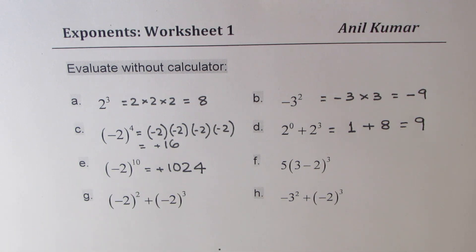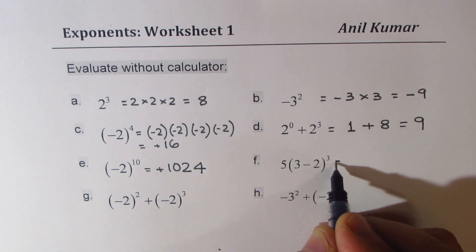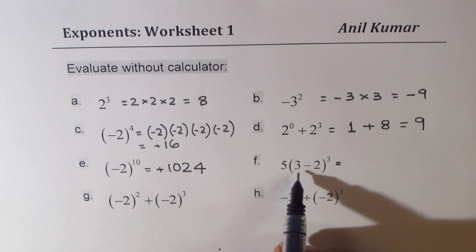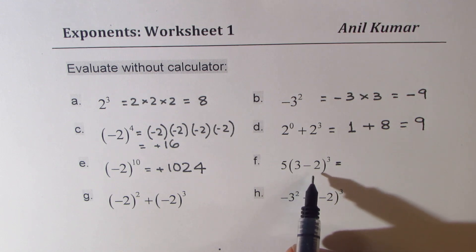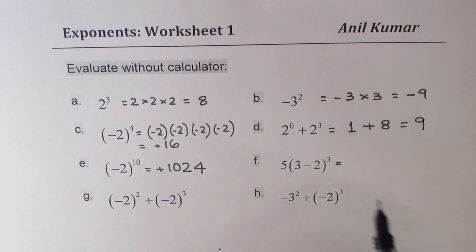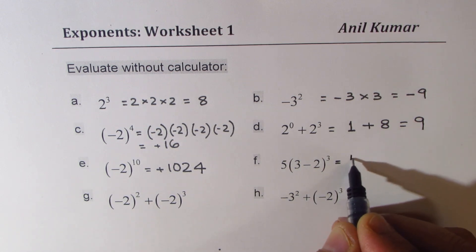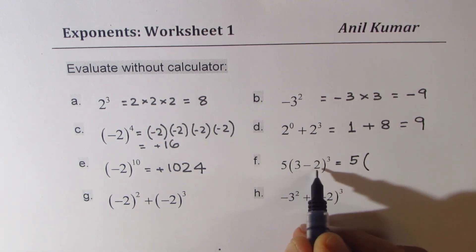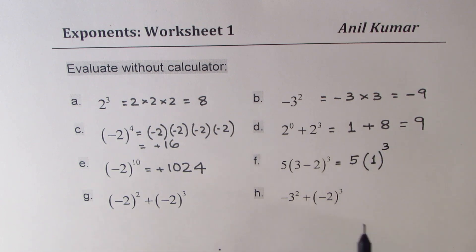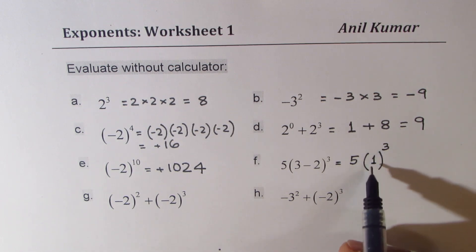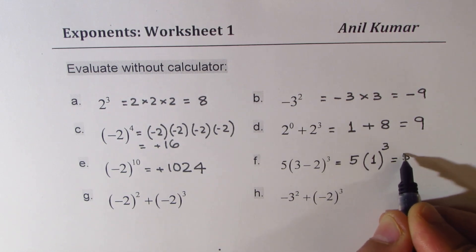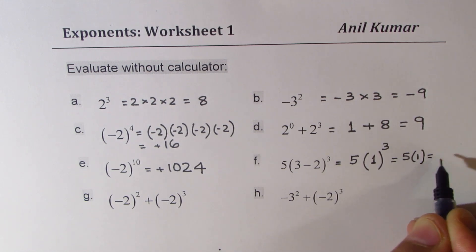Now here we have 5 times (3 minus 2) whole cube. Applying the rules, within the brackets we should calculate first. So it would be 5 times — what is 3 minus 2? Just 1. Now we have to cube 1. 1 to the power of anything is just 1. So we get 5 times 1, which is 5.